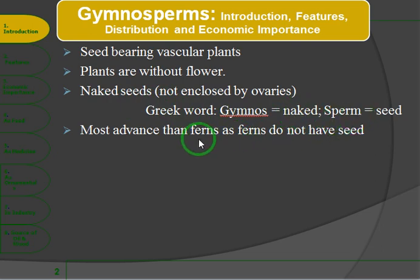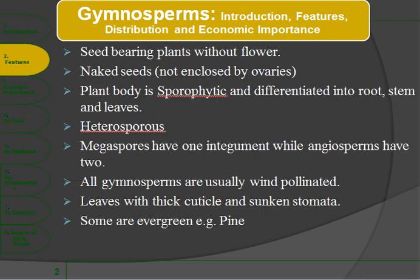Gymnosperms are more advanced than the ferns, because in the ferns there are no seeds. They share some features like seed-bearing plants but there are no flowers — the seeds are naked, not enclosed in the ovaries.